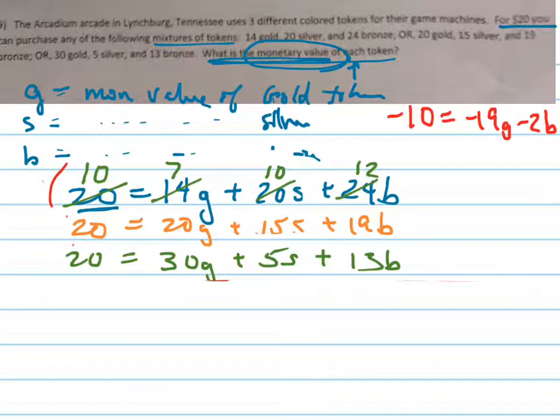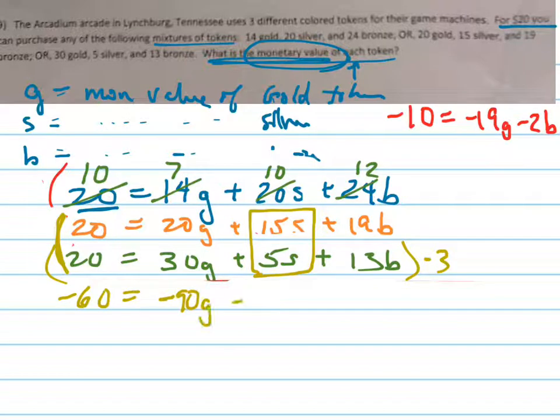Okay, now I'm going to use these two equations, the bottom two, and I have to get rid of the S again. So to do that, I just need to multiply this bottom equation here by negative 3. And so let's do that. Negative 60 equals negative 90G minus 15S minus 39B. That's the new bottom equation. When I combine that with this equation right here, my resulting equation, notice that the S's are gone, because negative 15, positive 15 and negative 15 are 0.